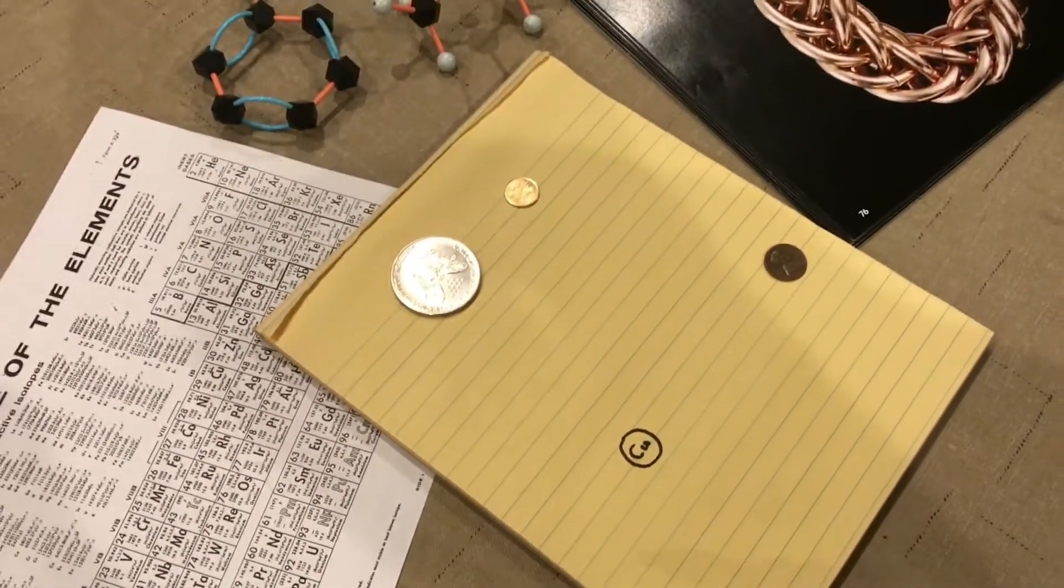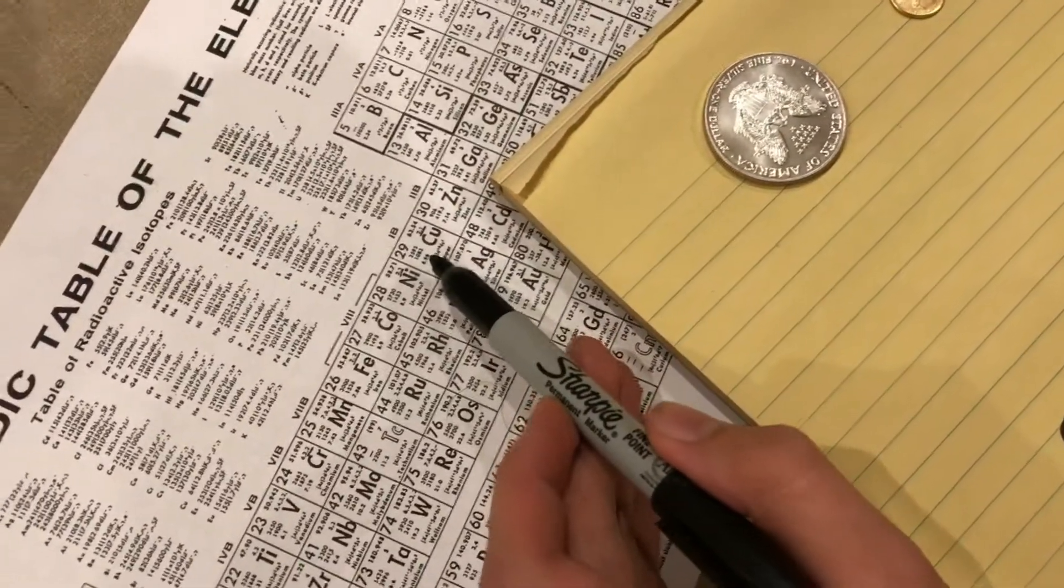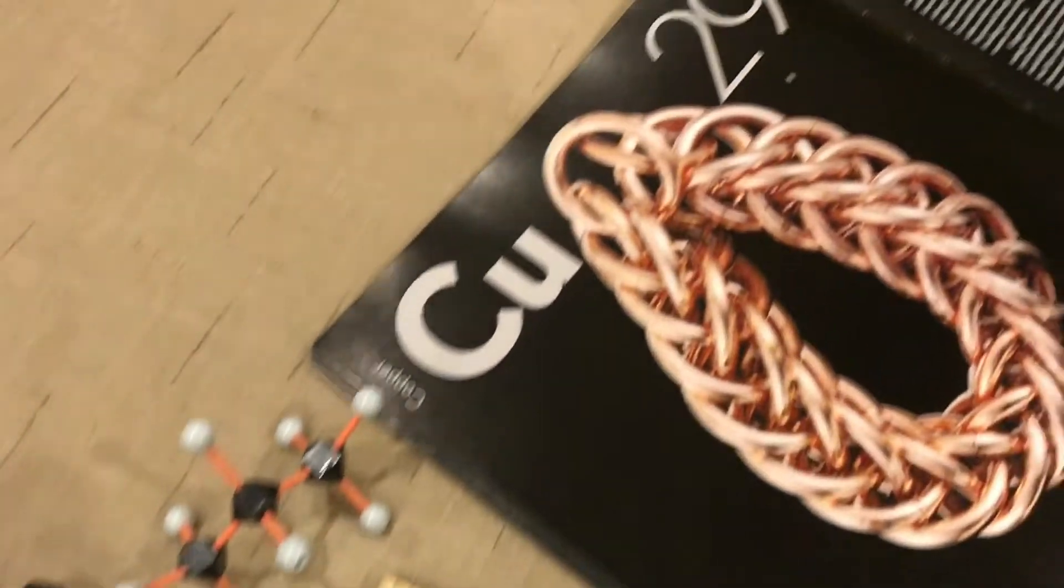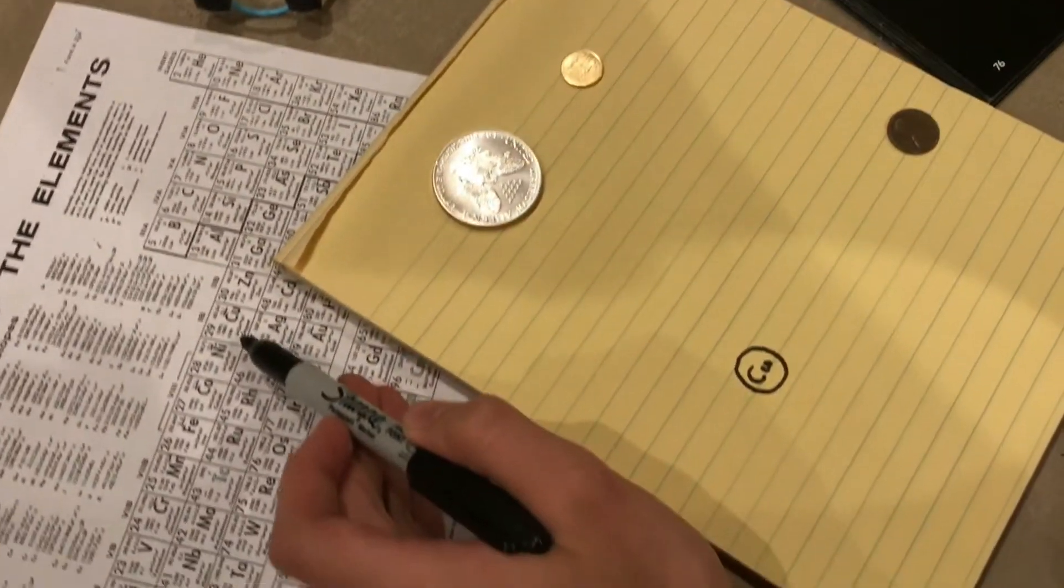The periodic table tells us copper is number 29. The number on the periodic table tells you two things: the number of protons in an atom and the number of electrons.